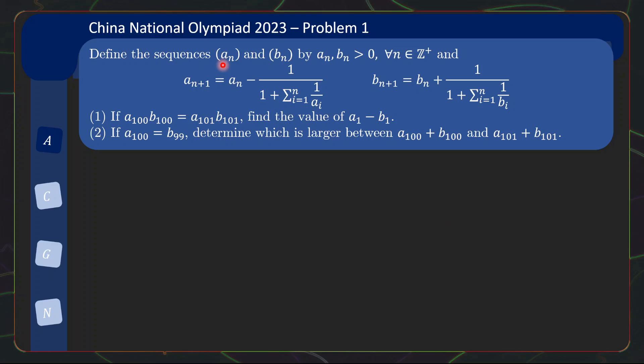For this problem, we have two sequences, an and bn, which are positive terms. an+1 is described by this rule, and bn+1 is described by this rule. These are complicated-looking rules. Before taking a look at the subproblems, let us first try and better understand these rules. When we are faced with a complicated-looking rule, one of the natural things to try is to actually work out some simple cases in order to get a better understanding.